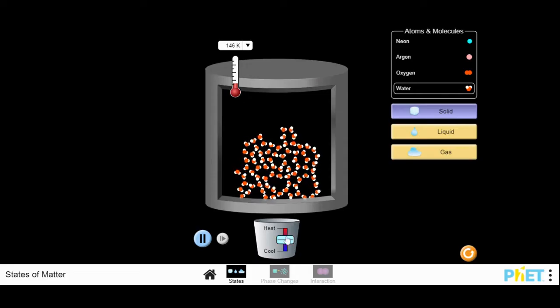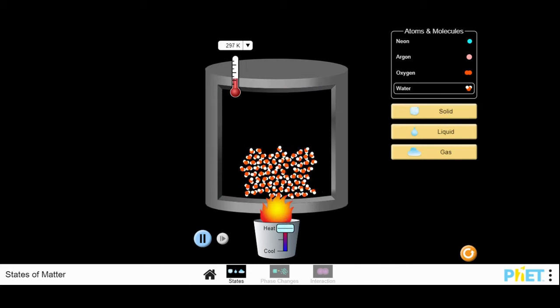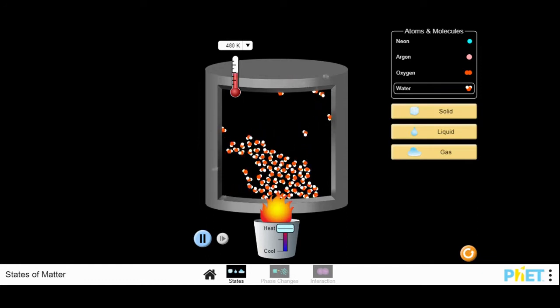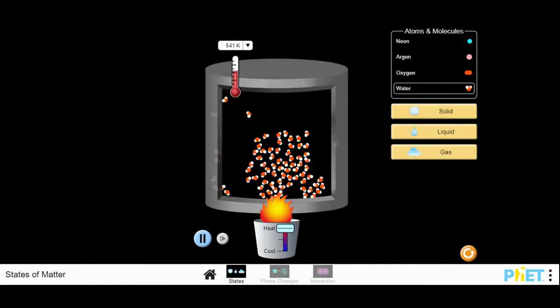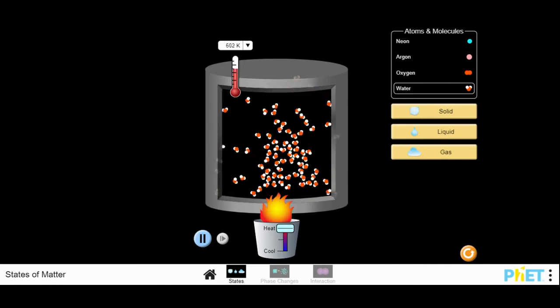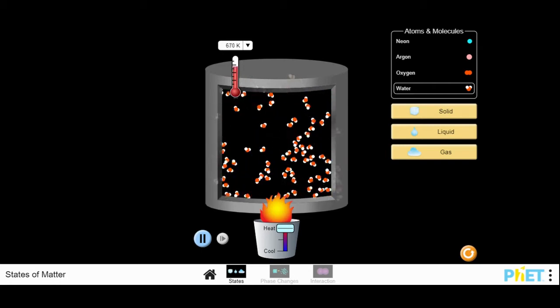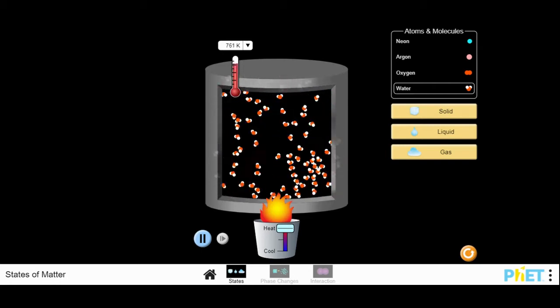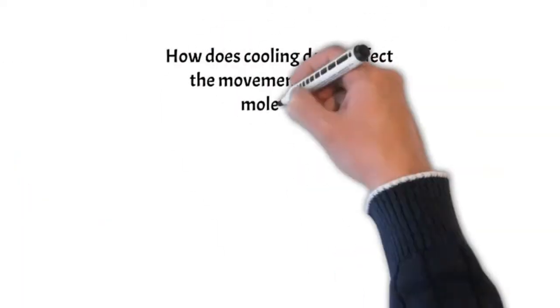As heat is applied, you can see that the molecules move faster and faster and further away from one another. You can see them starting to break away and clearly entering different phases or states of matter.